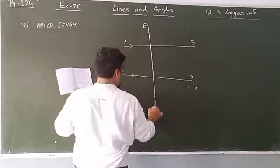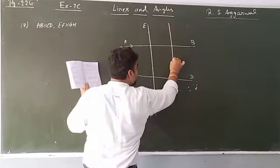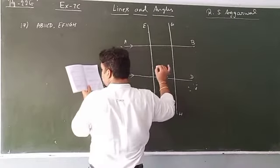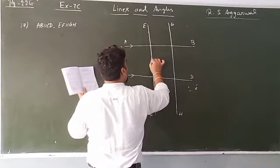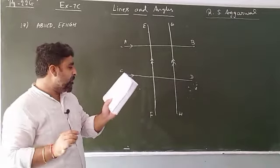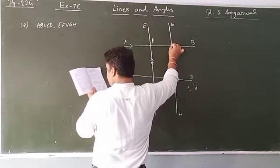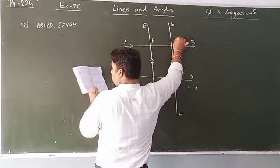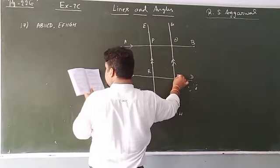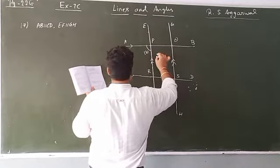EF is parallel to GH. Single arrows show one pair of parallels, double arrows show the other pair. Points are P, Q, R, and S. This angle is 110 degrees. Since AB and CD are parallel and a transversal crosses them, corresponding angles are equal — so if this angle is 110, this angle will also be 110 degrees.